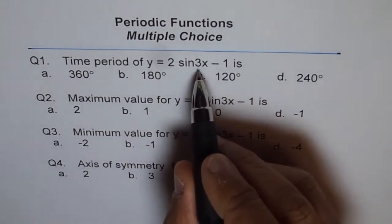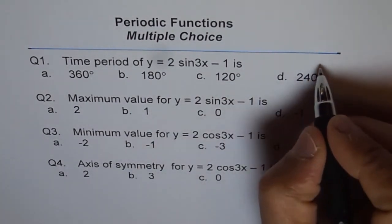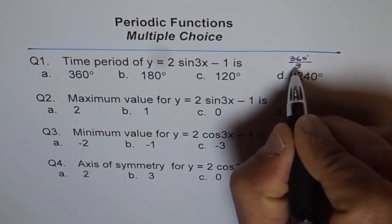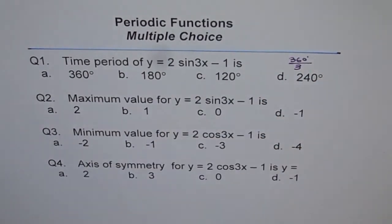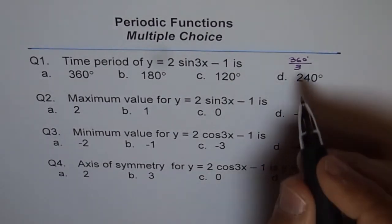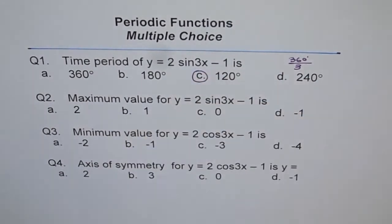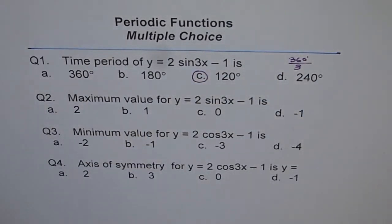K is 3, so the time period for this wave is 360° divided by 3. We get 360 divided by 3, which is 120. So the choice is C, that is C is your correct answer, 120°.